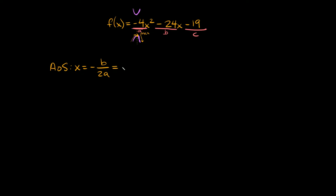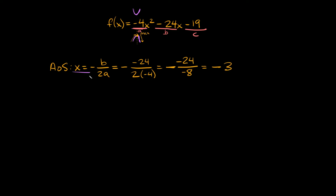So the axis of symmetry here is going to be equal to negative b — and b is negative 24 — so we put negative 24 on top, over 2a where a is negative 4. So this is equal to negative negative 24 over 2 times negative 4, which is negative 8. Negative 24 divided by negative 8 is positive 3, so this equals negative 3. The axis of symmetry is at x is equal to negative 3.